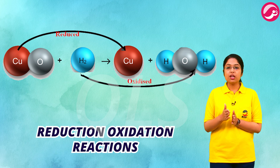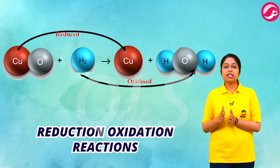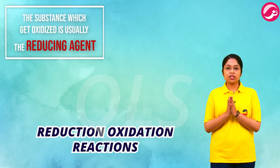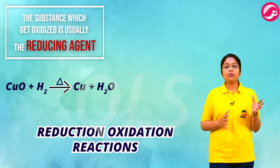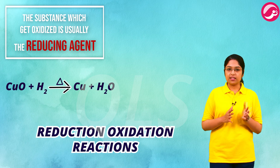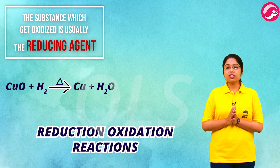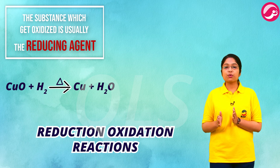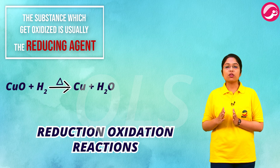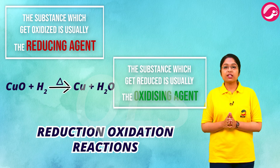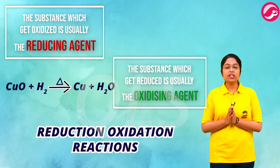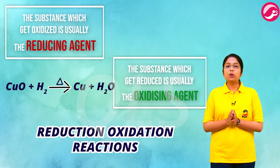We can say that hydrogen is the reducing agent. The substance which gets oxidized is usually the reducing agent. Similarly, the oxidation of hydrogen is caused by copper, so we can say that copper is the oxidizing agent. The substance which gets reduced is the oxidizing agent.